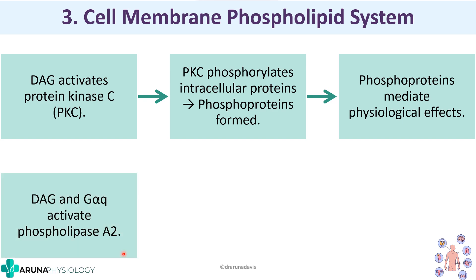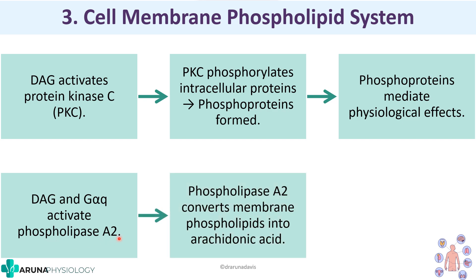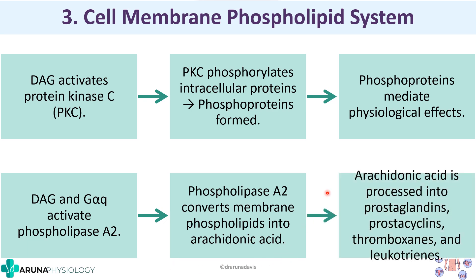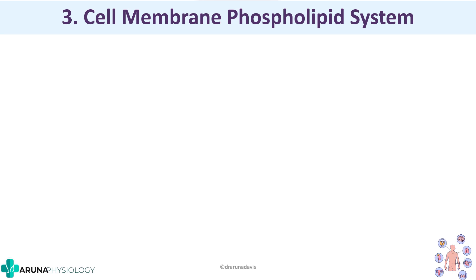DAG can also activate phospholipase A2, which converts membrane phospholipids to arachidonic acid. Arachidonic acid can be processed into prostaglandins, prostacyclins, thromboxanes, and leukotrienes — all physiologically important molecules. This is another action of DAG apart from activation of protein kinase C.